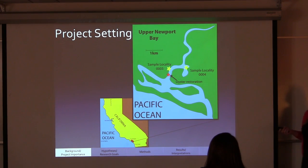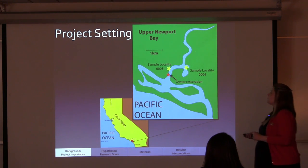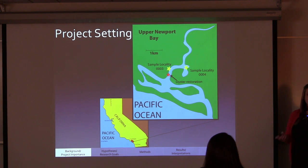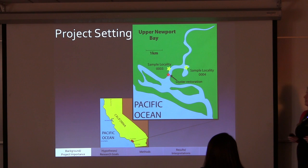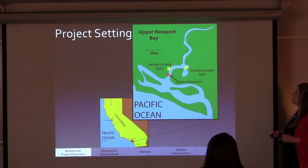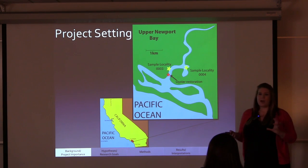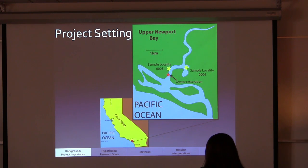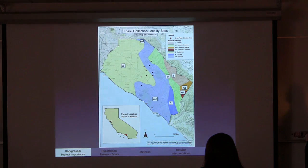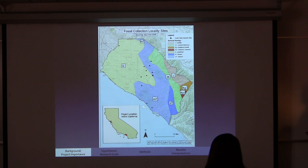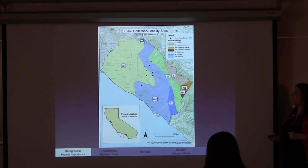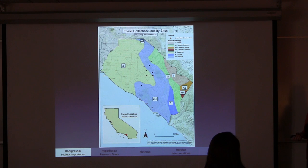This leads us to our project setting. Because of all these factors and oysters declining, we want to take a historical look at oysters. This is a two-part study. The first part involves collecting fossil oysters from fossilized oyster reefs within Newport Bay, which is a great locality because it has two distinctive fossil oyster reefs flanking each side of the bay and is where the current oyster restoration project is occurring. The second part involves looking at curated oyster specimens at the Cooper Center, with GPS localities across Orange County shown here.